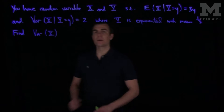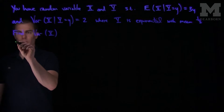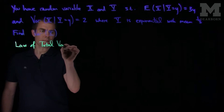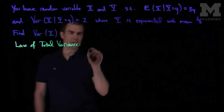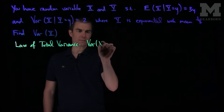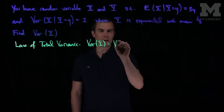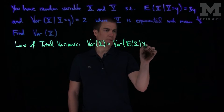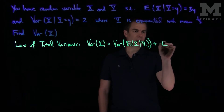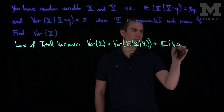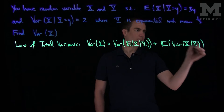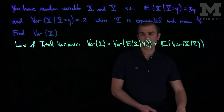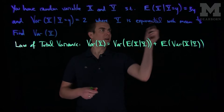We're asked to find the variance of x. In this problem, we'll use the law of total variance. This states that the variance of x is the variance of the conditional expected value of x given y, plus the expected value of the conditional variance of x given y. Both of these things are given to us in the problem. The expected value of x given y is 3y.